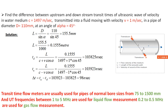Transit time ultrasonic flow meters are used for pipes with normal bore sizes of 75 to 1500 mm diameter. The ultrasonic frequencies used for liquid flow measurement are around 125 kHz, and for gaseous measurement the range is 0.2 to 0.5 MHz. Thank you for watching.